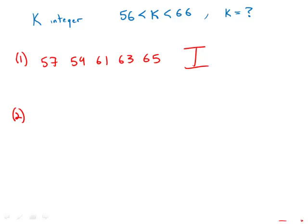Now forget statement number 1. Move on to statement number 2. Statement number 2 tells us that if k plus 1 were divided by 3, the remainder would be 0. So in other words, k plus 1 is a multiple of 3.